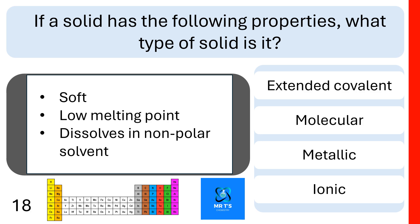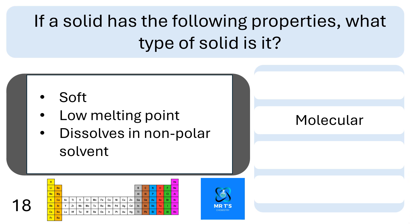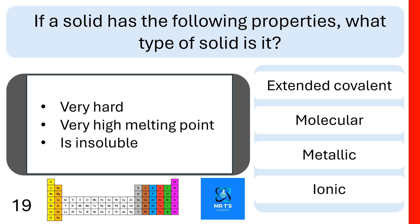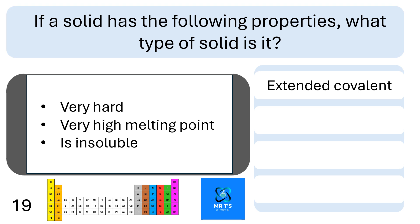Question 18. If a solid has the following properties, what type of solid is it? So if it's soft, has a low melting point, and dissolves in non-polar solvents, is it extended covalent, molecular, metallic, or ionic? Correct — it is a molecular solid. If a solid has the following properties, what type of solid is it? If it's very hard, it has a very high melting point, and it is insoluble both in polar and non-polar solvents, is it extended covalent, molecular, metallic, or ionic? This is an extended covalent solid.